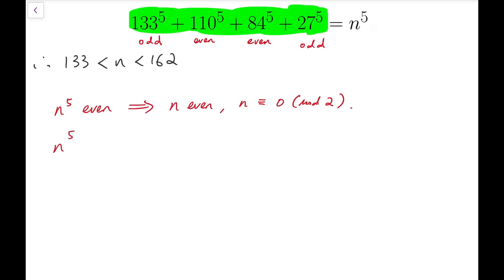So n^5 is congruent to, for 133 it's congruent to 1 mod 3, so it's 1^5 added by 2^5. Plus 0^5 and 0^5, because 84 and 27 are both multiples of 3. So that means it's congruent to 0 mod 3. Now if n is not a multiple of 3, then n^5 cannot be a multiple of 3 as well. So that means n is a multiple of 3 as well.